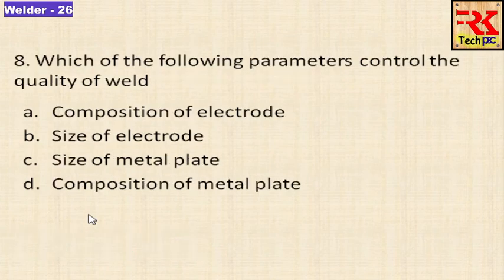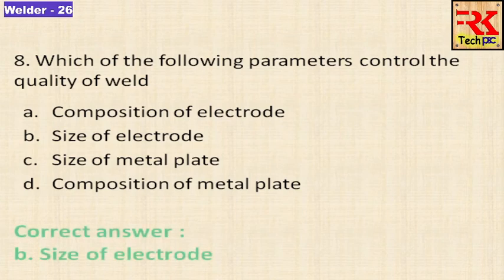Which of the following parameters controls the quality of a weld? Options are composition of electrode, size of electrode, size of metal plate, and composition of metal plate. The answer is size of electrode.